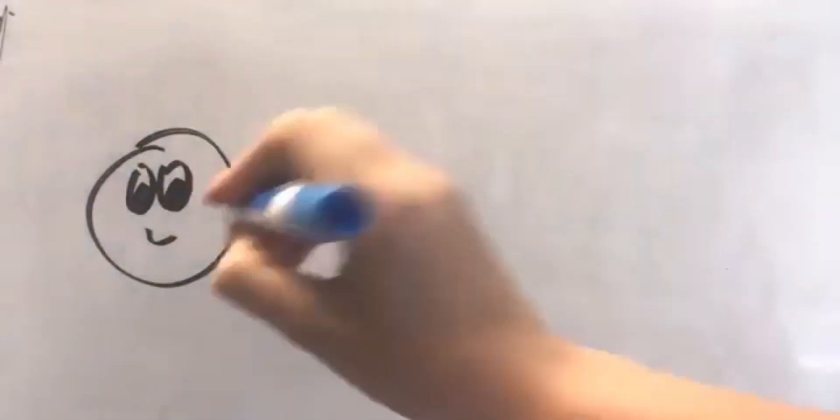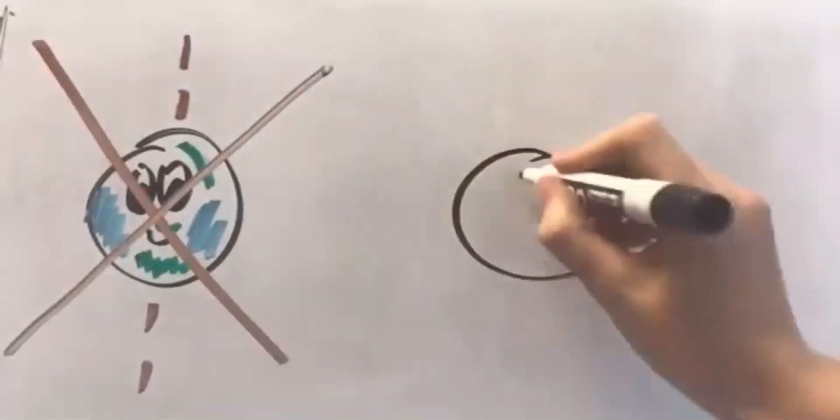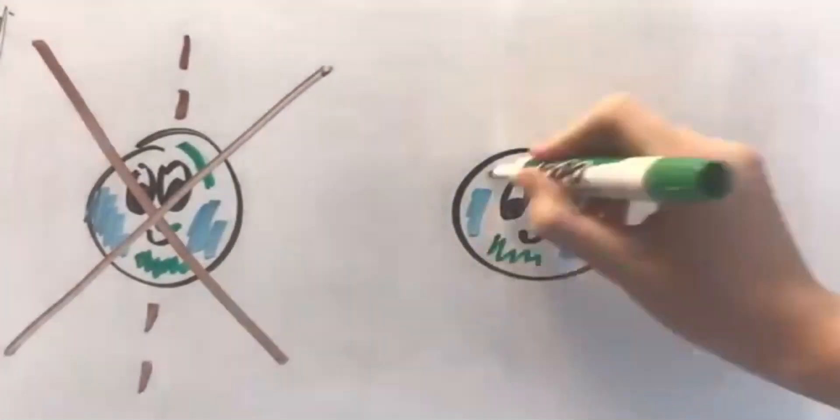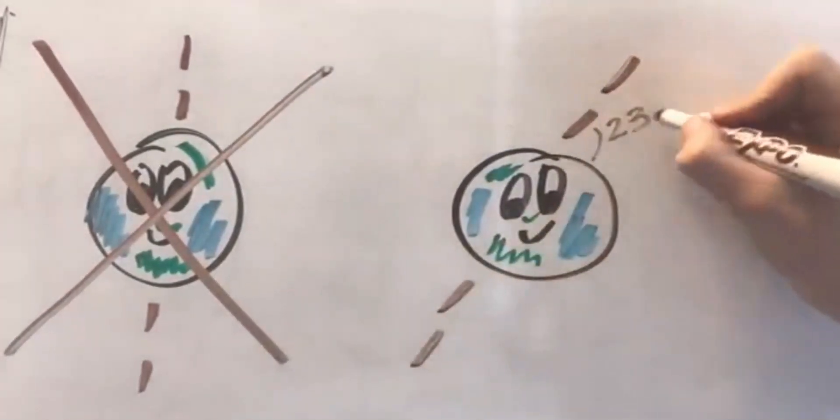The axis is an imaginary line that runs through my center. I spin around this line. Also, I don't actually stand up straight. I lean a little bit. Every time I make one full spin or rotation, one full day has gone by.